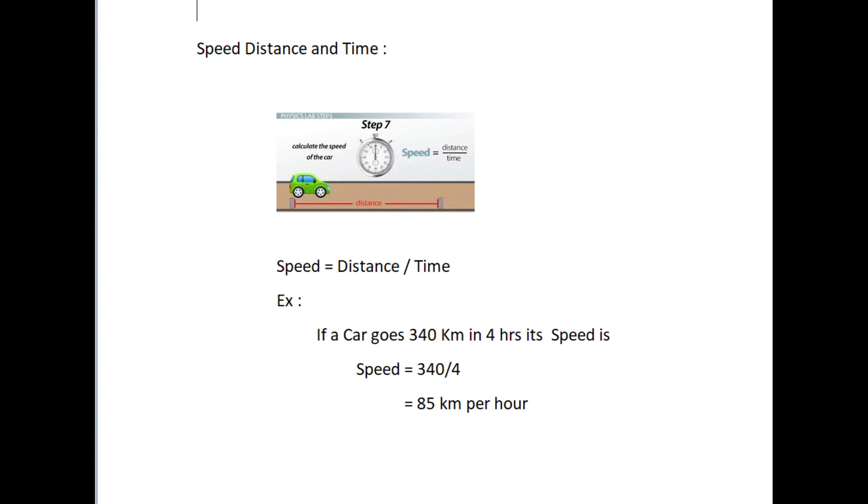Speed, distance, and time. Speed is calculated by dividing the distance traveled by the time it takes to travel that distance. That is, speed equals distance divided by time. We can calculate the speed of cars, trains, planes, etc.